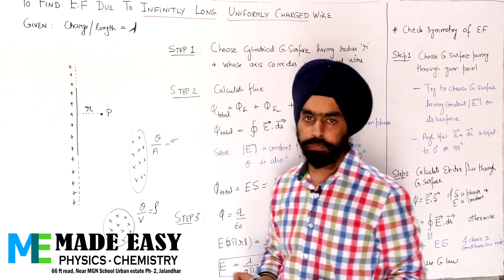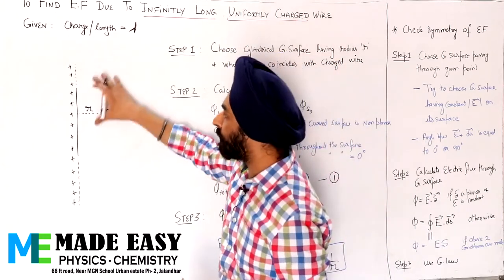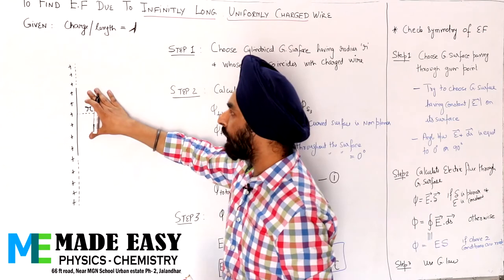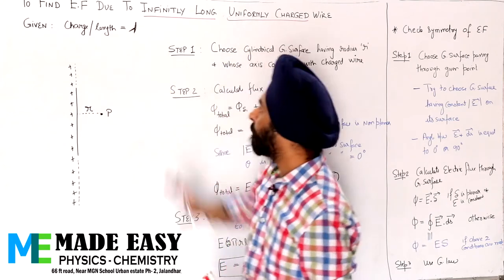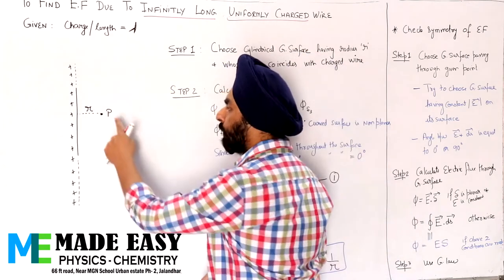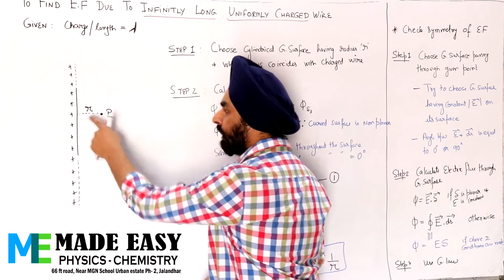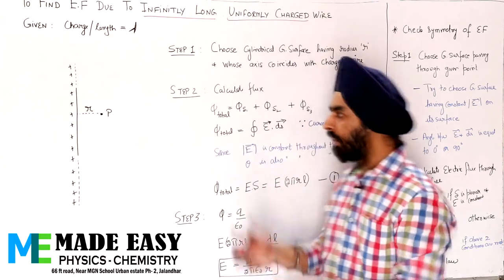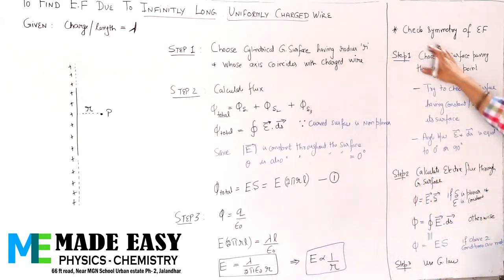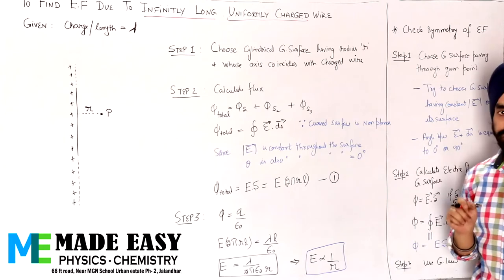Coming back to this problem: you are given charge per unit length is lambda (λ) — total charge is not lambda, but charge per unit length is lambda. You have to calculate the electric field at point P, which is at distance small r from this wire. Let's start from the first step that we saw in the introduction video.